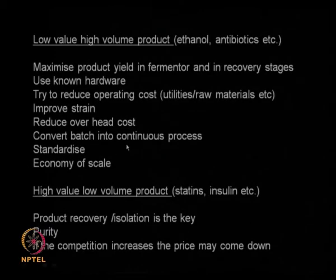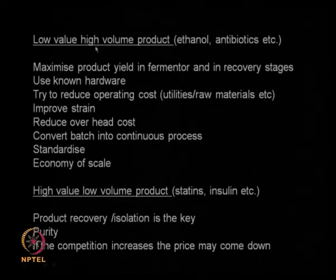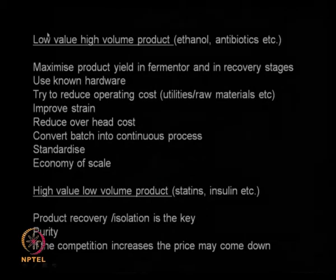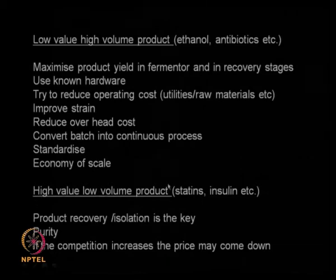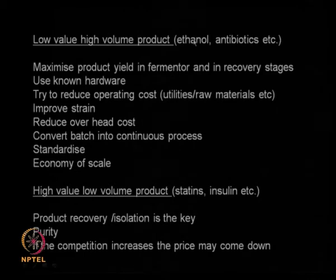There are two types of products manufactured in bioprocess engineering. One is called low value, high volume product — the selling price is low but you make large amounts. The other is high value, low volume product — the selling price is very high but you make only small amounts. Examples of low value, high volume products include ethanol, which is made in large quantities but costs little. Many antibiotics like penicillin are also made in large volumes at very low cost.